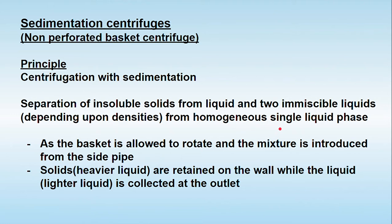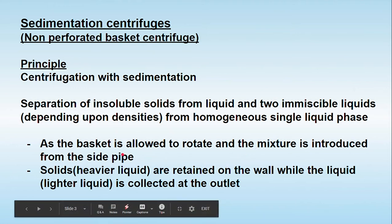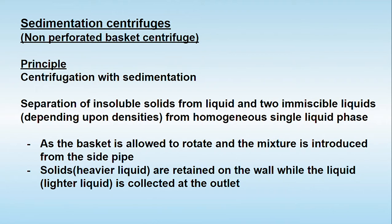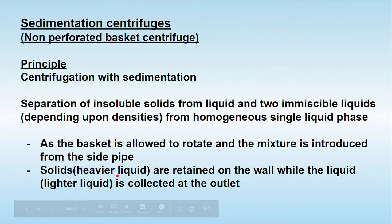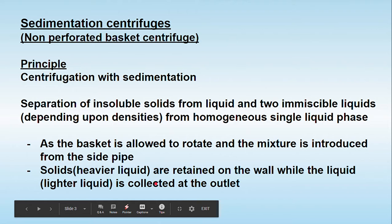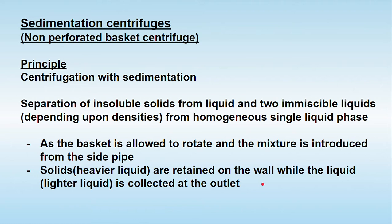The basket or bowl is allowed to rotate and the mixture is introduced from the side. Solids are thrown to the outer wall and retained near the inside wall of the bowl. For separation of two immiscible liquids, the heavier liquid collects near the wall while the lighter liquid collects at the center. Any solids present are collected at the bottom of the bowl.